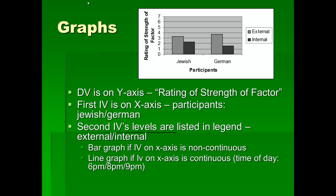Another topic is graphs. Some students don't know how to read a graph, so let me go over the basics. On the y-axis is the dependent variable. On the x-axis is the independent variable. We can see that the dependent variable in this graph is the rating of the strength of the factor. Since you know this rule, you can figure out the names of the DVs and IVs just by looking at a graph.